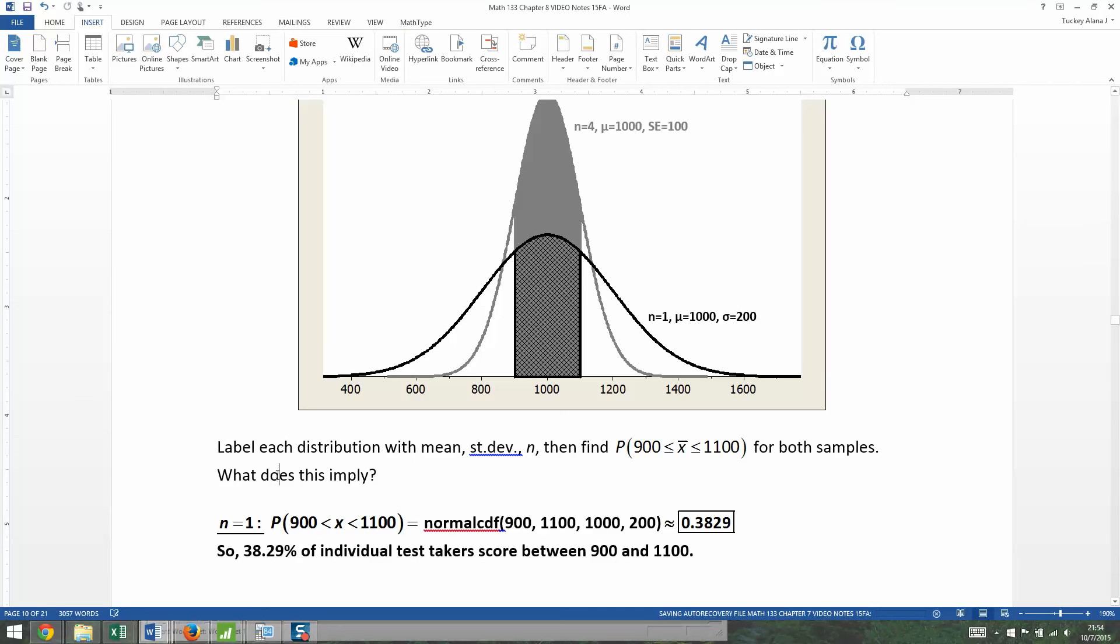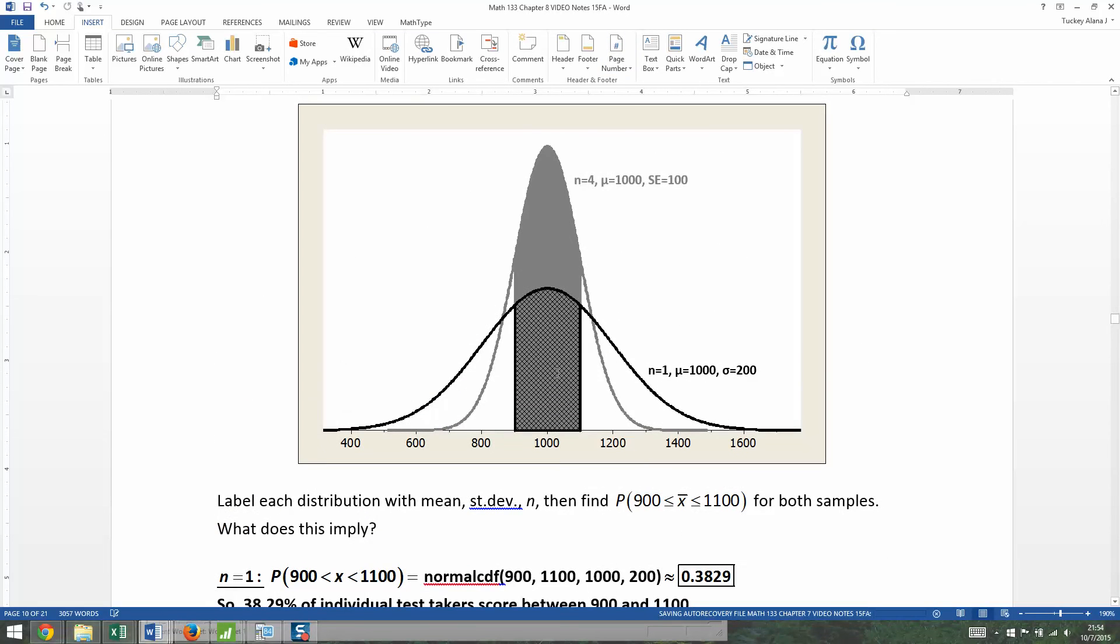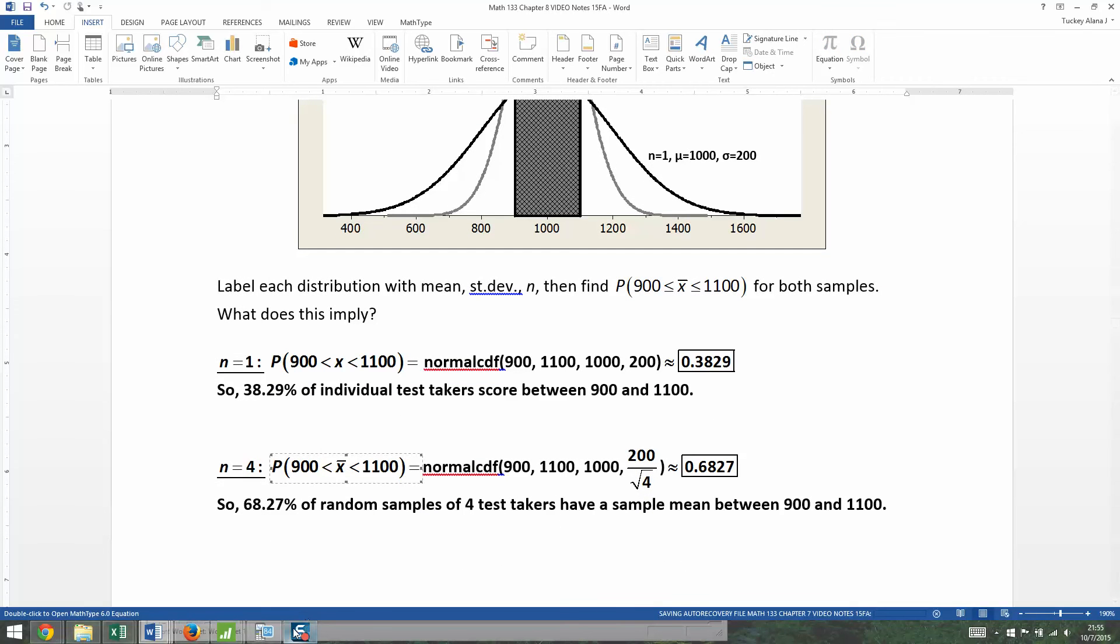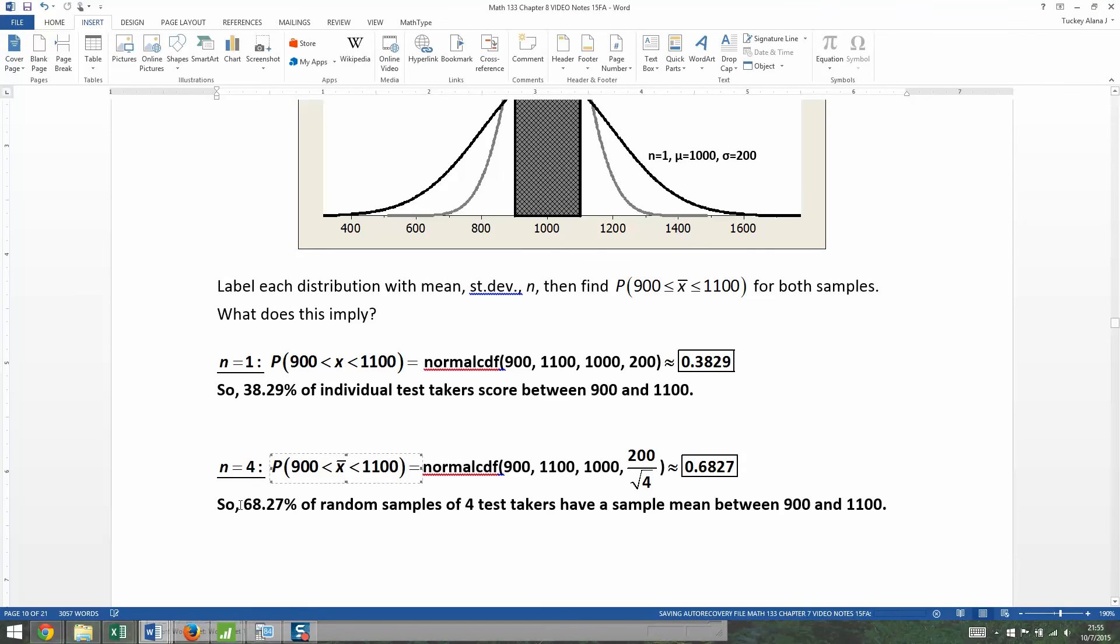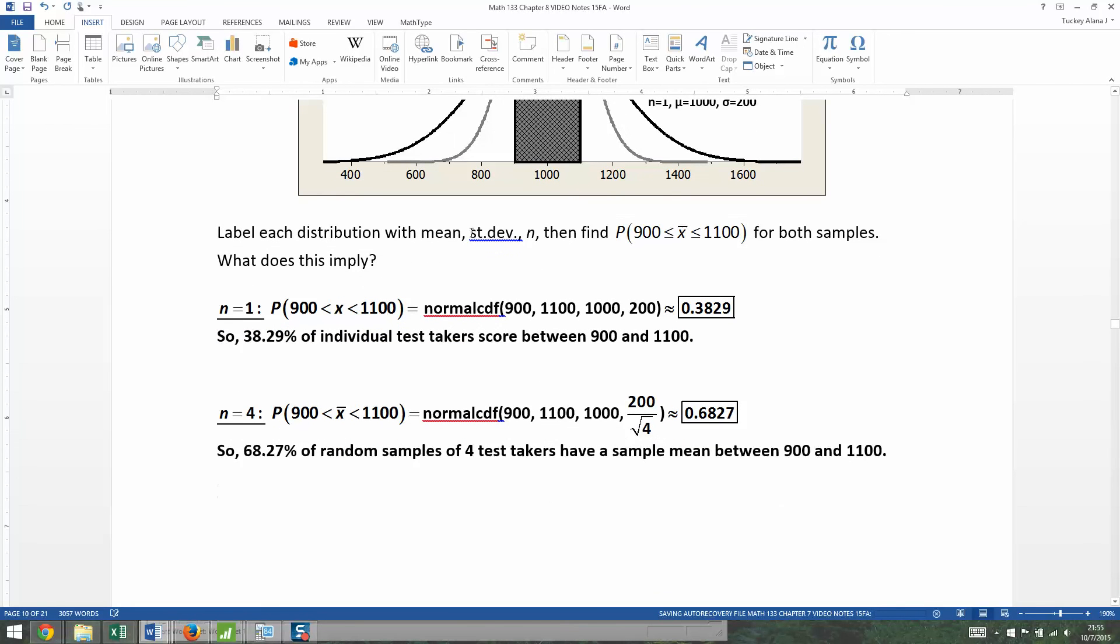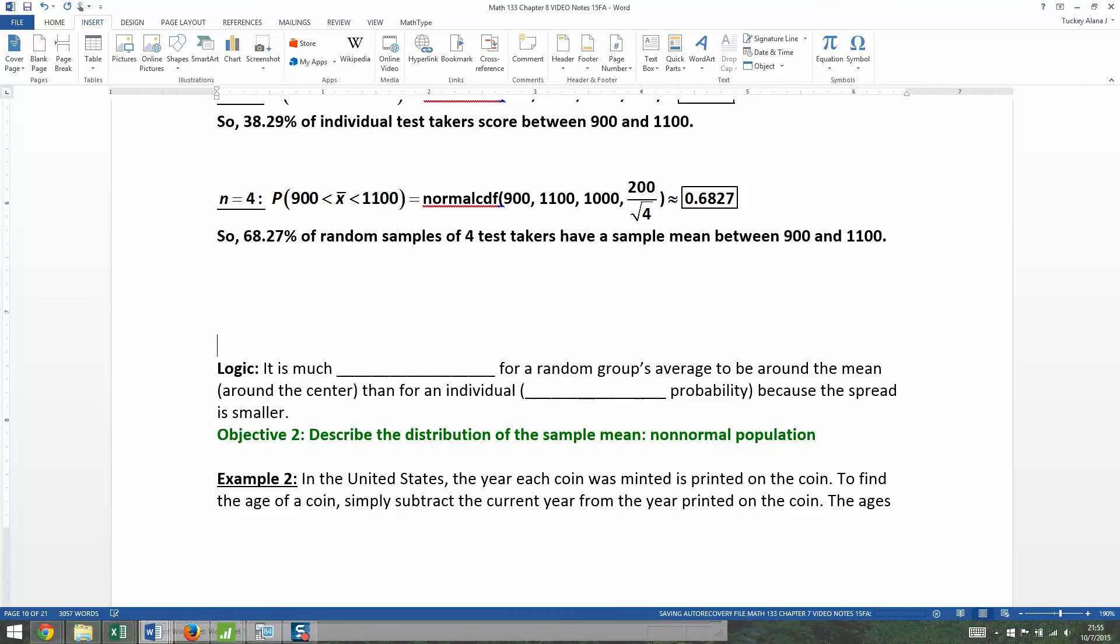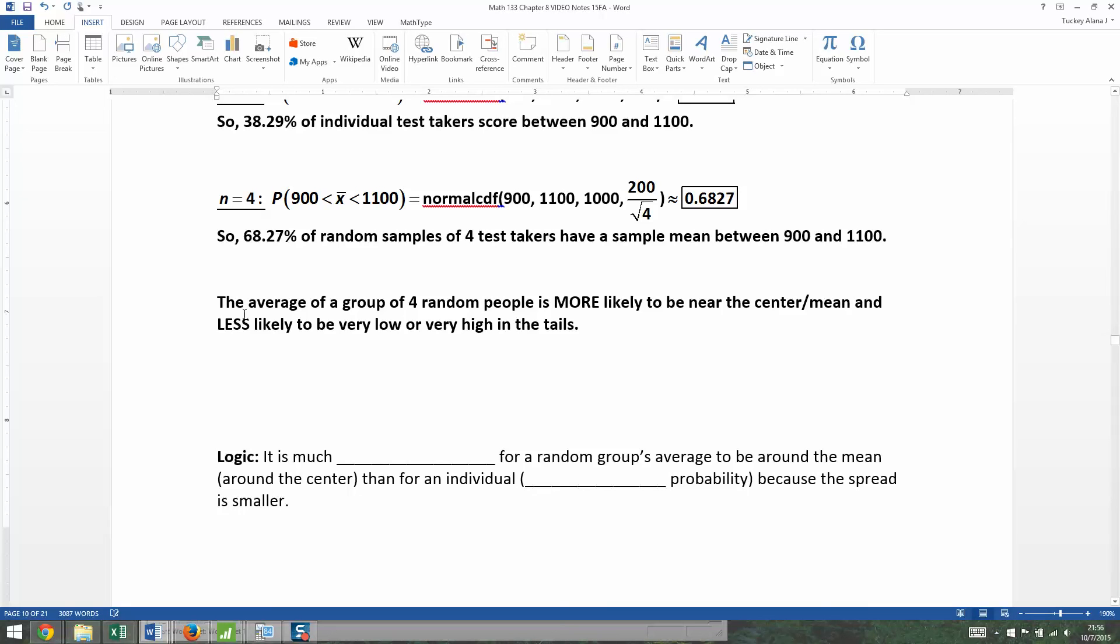But what if it's four, n equals four? That's the gray one. And hopefully you're noticing there's a lot of that gray curve in that area. So it should be larger, and it is. So let me show you how to get it. You go back to distributions, number two, normal CDF. All this is good, except your standard deviation is no good. You want 200 divided by the square root of four, or if you'd like, you could say 100. The computer can actually handle it written like this. And press enter, and you get 6827. So 68.27% of random samples of four test takers have a sample mean between those. And again, it's because people balance each other out. So they're more likely to be in the center, less likely to be on the edges when you're talking about groups of size four's averages.